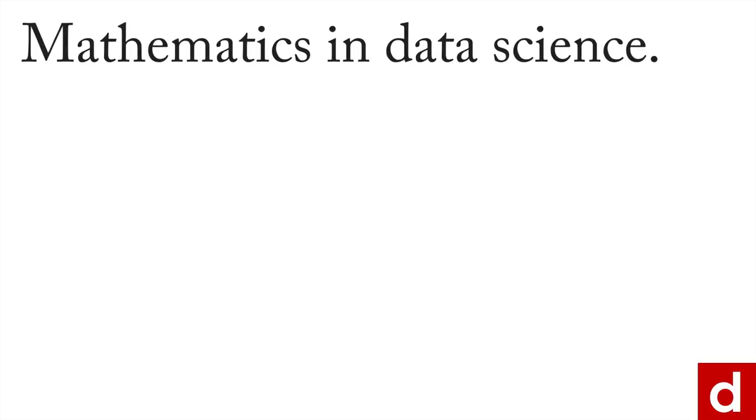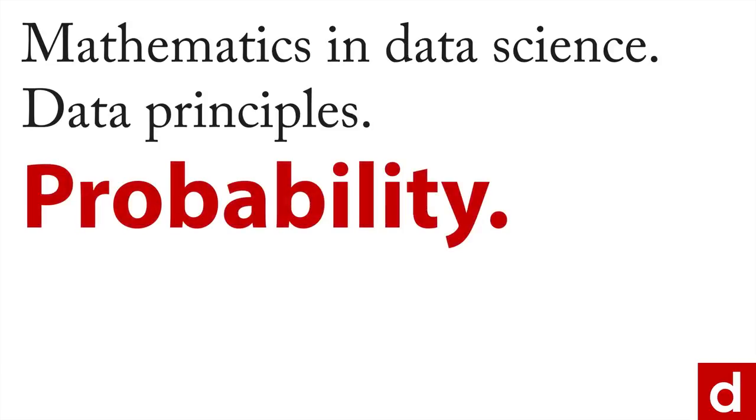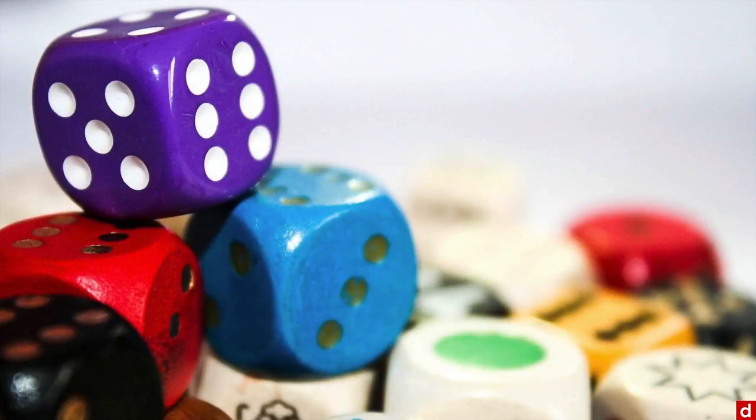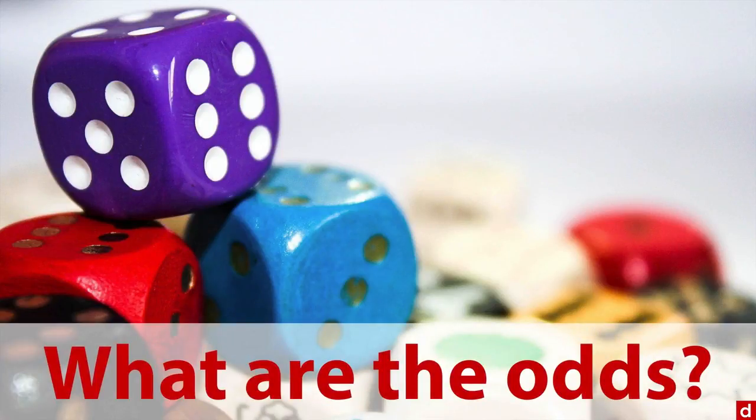A really important element of mathematics and data science, one of its foundational principles, is probability. Probability comes intuitively for a lot of people with things like rolling dice or looking at sports outcomes. The fundamental question, 'what are the odds,' gets at the heart of probability.